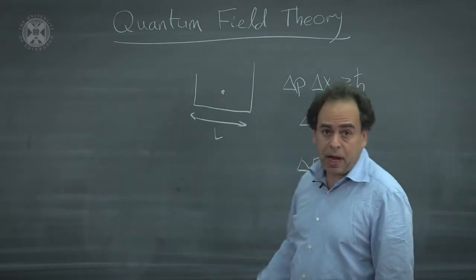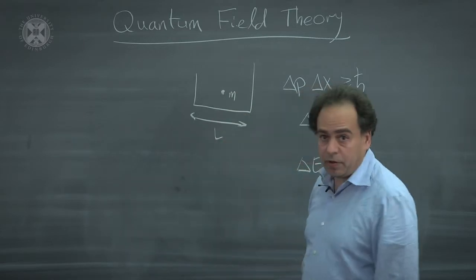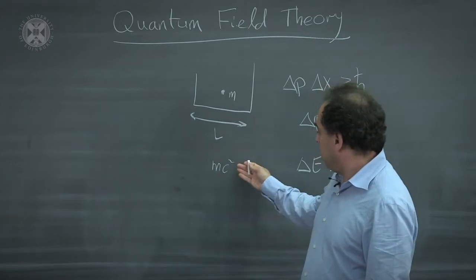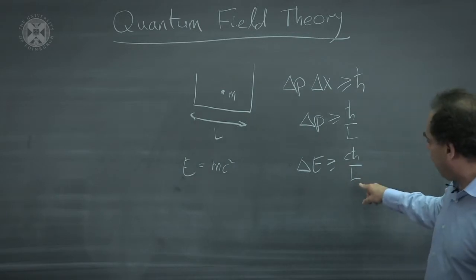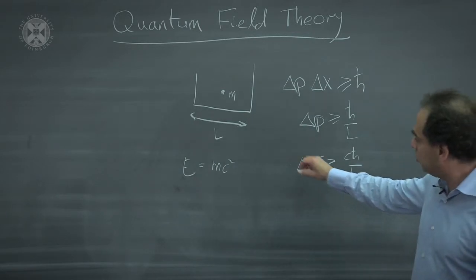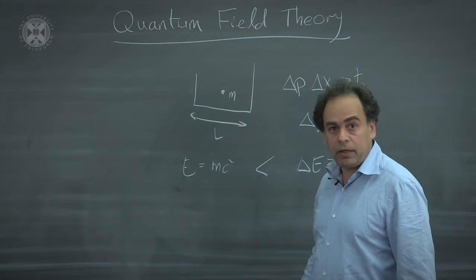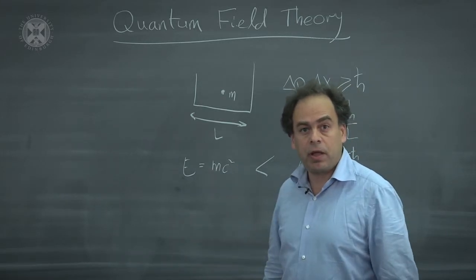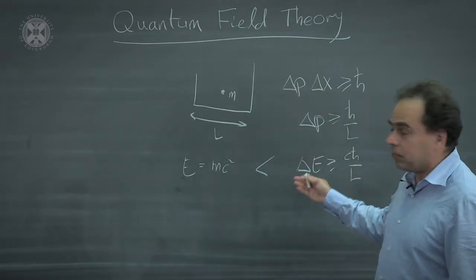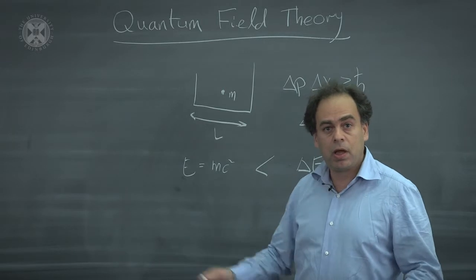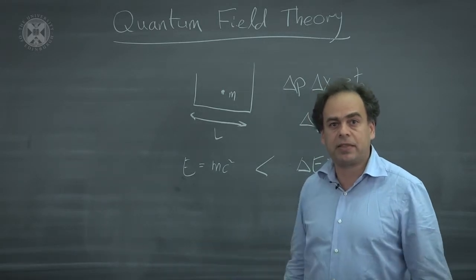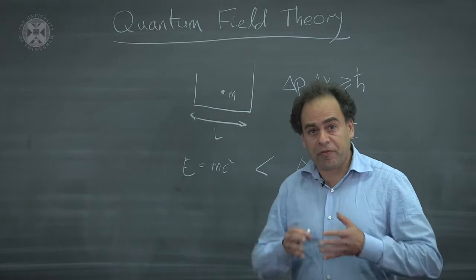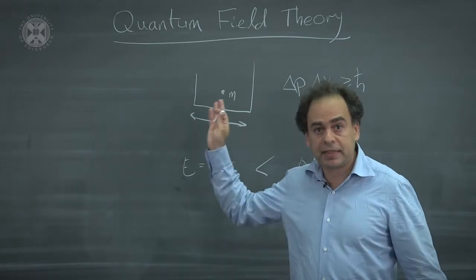Now let us think about the mass of this particle. The particle has mass m, and therefore rest energy mc squared. Now, if we make the box small enough, then the uncertainty in the energy would start to be bigger than the energy itself. And then we will be able to accommodate more than one such particle within the range of uncertainty. For this reason, we cannot claim that the particle was a single particle all the way through. A pair can be created, and would violate this assumption. We therefore need the framework in which the description of a varying number of particles is possible, and that's quantum field theory.